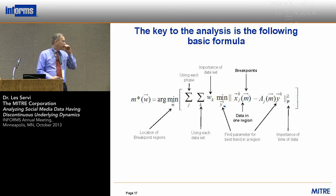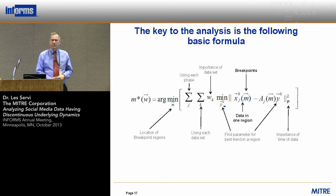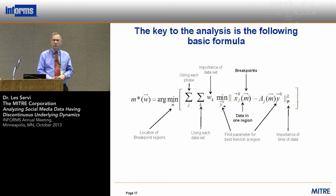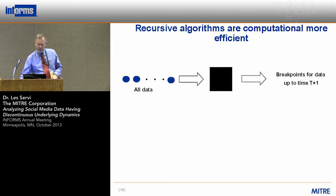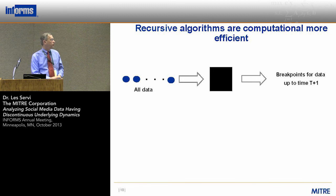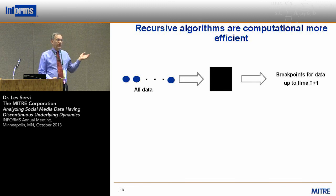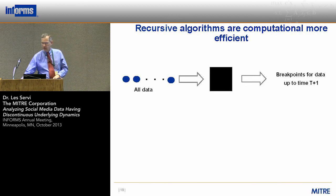This looks like a complicated formula, but in a way it's extremely simple — it's using linear regression. You could view this as a recipe to solve this problem exhaustively. On the left you have all this data, you put it into this black box — which is the formula I showed you — and out come the breakpoints.